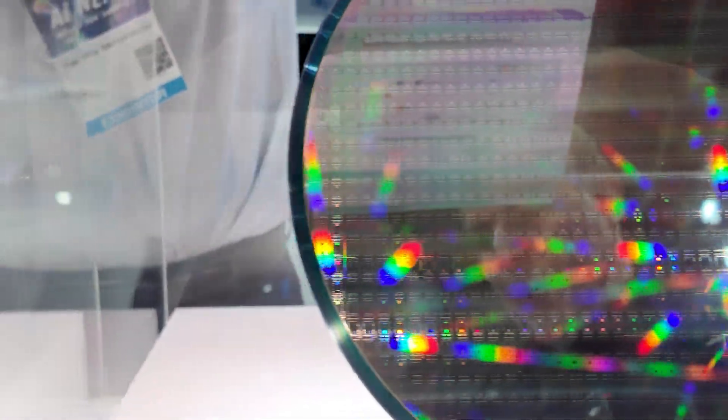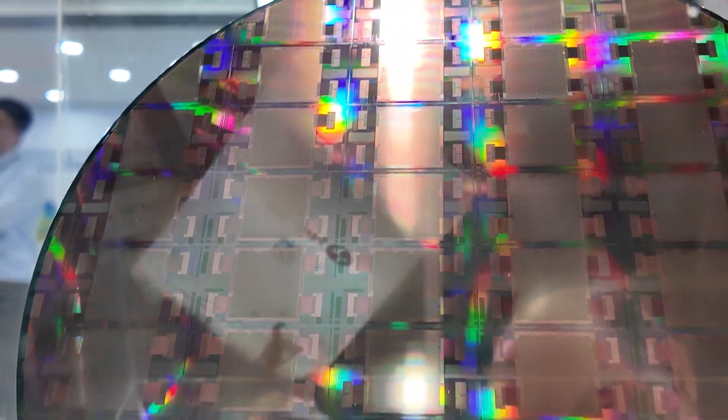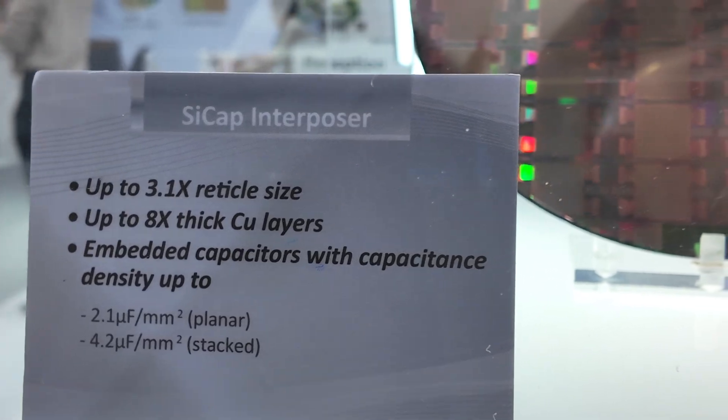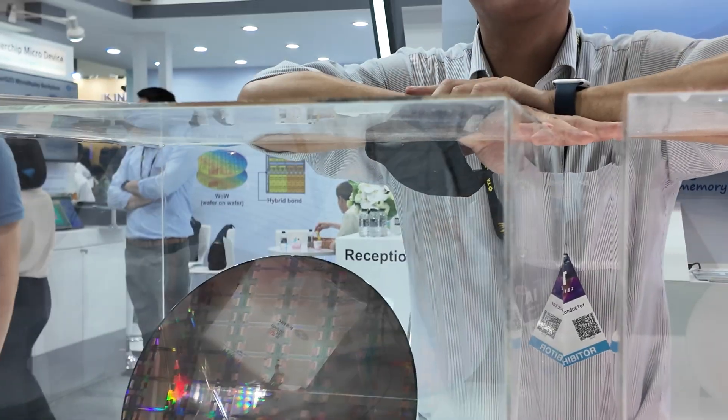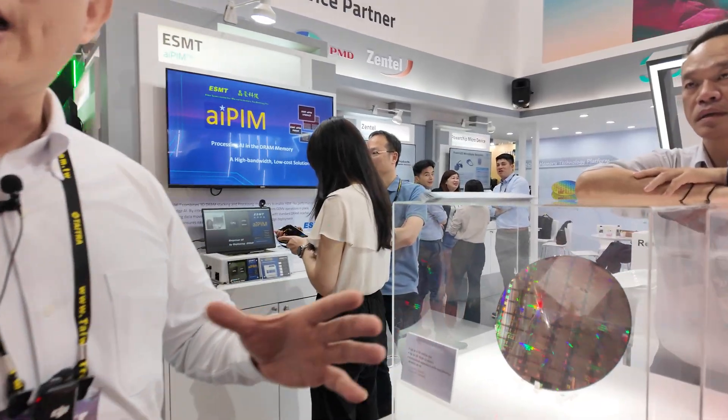There are different wafers shown here. The first one is called the browser. That's been a very big subject to accommodate the GPU and HBM together. Right now, we can do an interposer. The size of the interposer can be up to 3.1X the critical size. That means we can put the GPU and also any piece of the HBM on the same substrate.